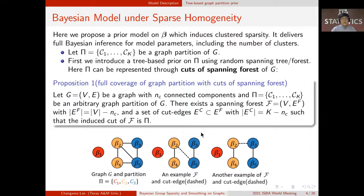first we let pi be graph partition of G. For example, the figure on the left shows a graph G and graph partition with three clusters. Now we introduce a tree-based prior on partition pi. This is based on the following proposition, where any graph partition can be represented through cuts of spanning forests of G. The figure below shows two examples.